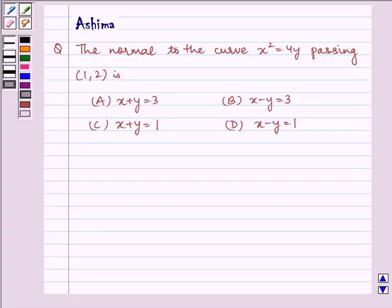Hello and welcome to the session. Let us understand the following question which says the normal to the curve x squared is equal to 4y passing through the point (1, 2) is: